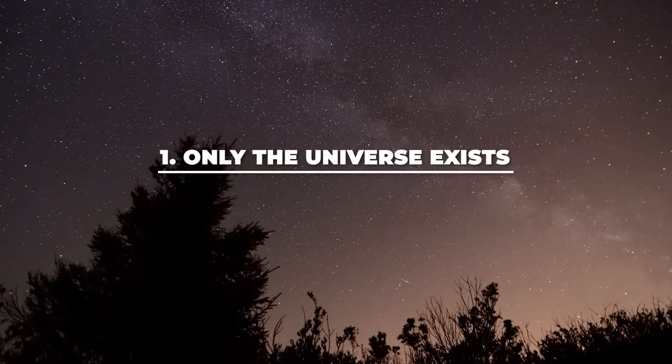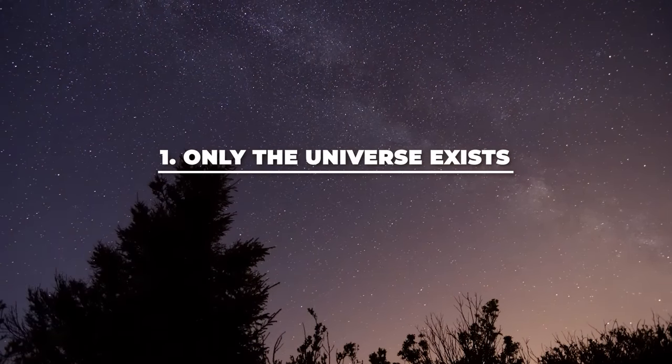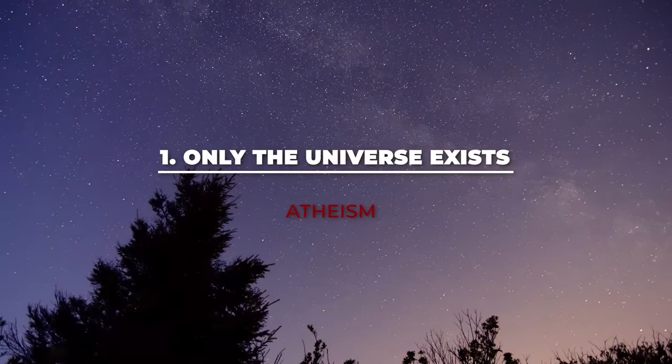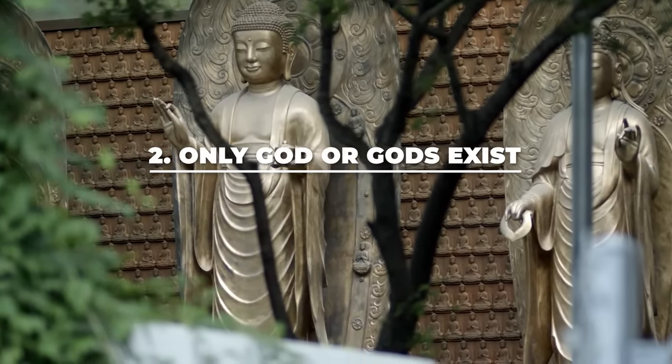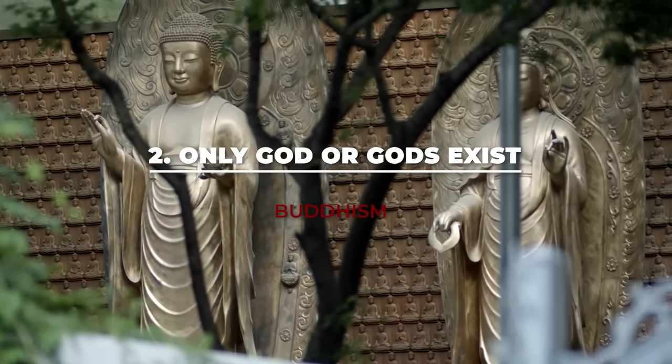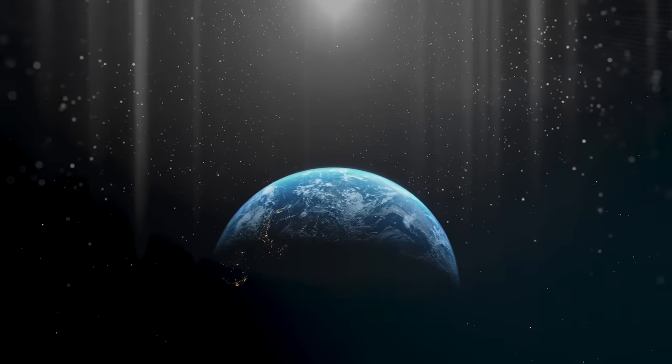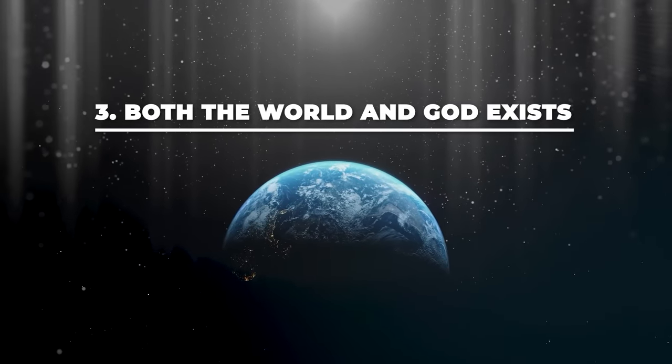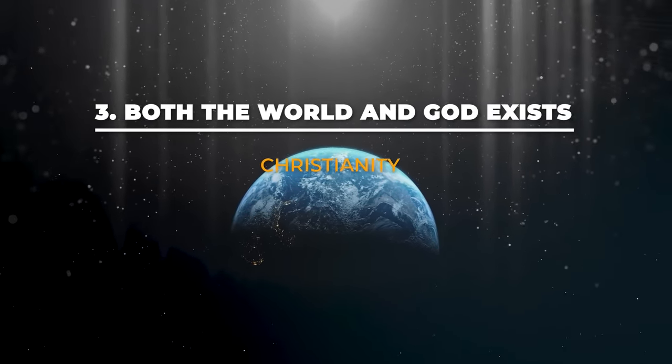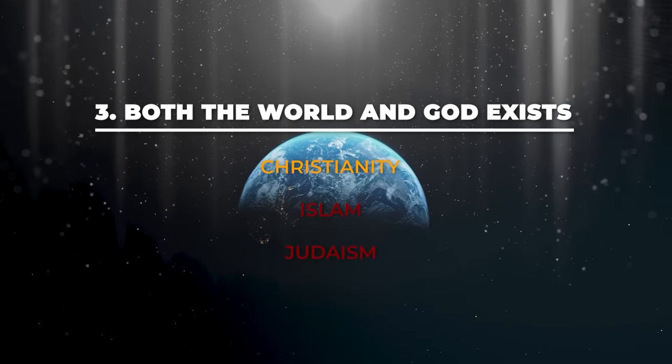One, only the universe exists. So here you find atheism and so on. Two, only God or gods exist. Here you find Buddhism and so forth. Lastly, both the world and God exist. Here you find for example, Christianity, Islam and Judaism. So, you don't need to be an expert in all these thousands of religions to critique them. You just need to critique the one group that they fall under, and then you critique all the religions under them.